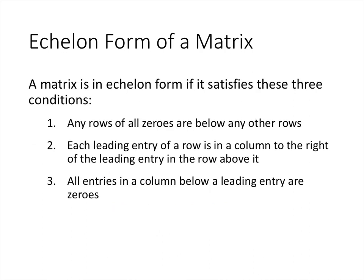Here's the definition of echelon form. A matrix is in echelon form if it satisfies these three conditions. The first condition is that any rows of all zeros have to be below any other rows. Condition 2 is that each leading entry of a row has to be in a column to the right of the leading entry in the row above it. And finally, all entries in a column below a leading entry have to be all zeros.